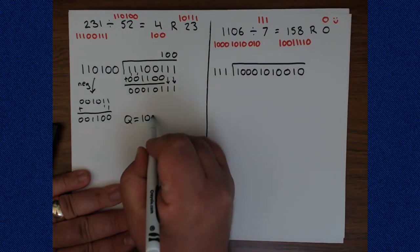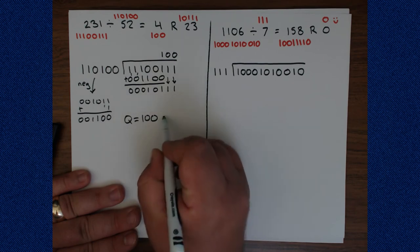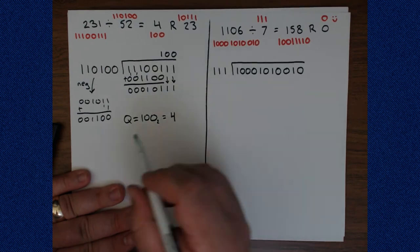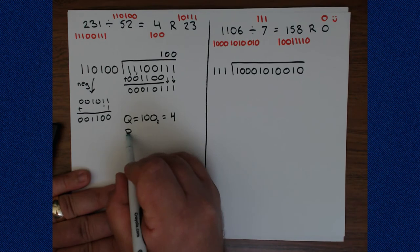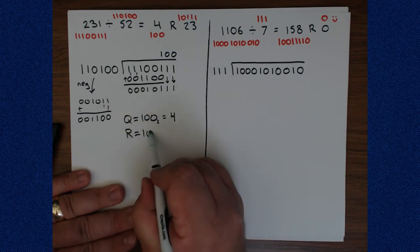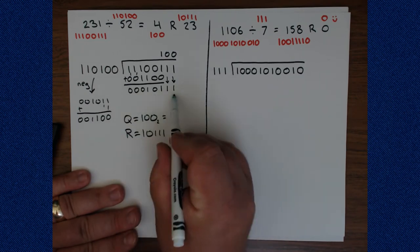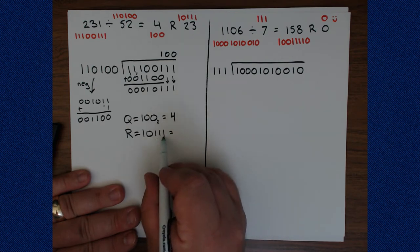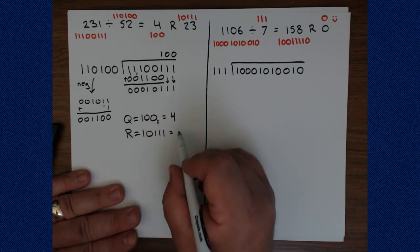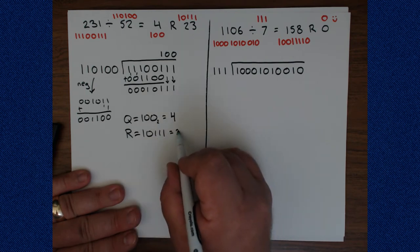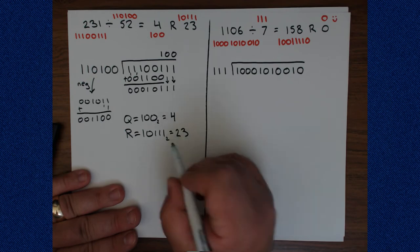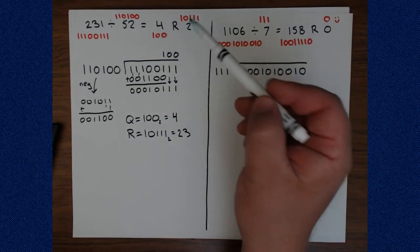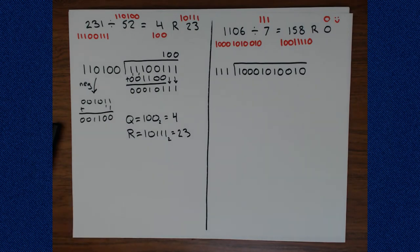This is our quotient and this is our remainder. The quotient is 1, 0, 0 in binary, which is the same thing as 4. The remainder is 1, 0, 1, 1, 1, which is 7 plus 16 = 23. The same numbers we expect from the pre-calculated values.